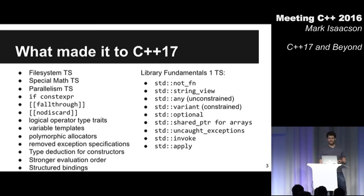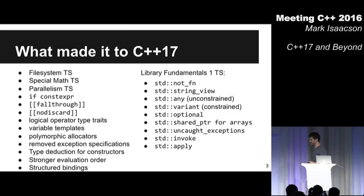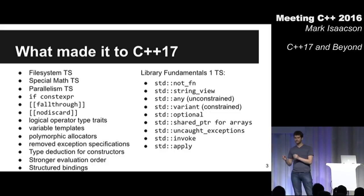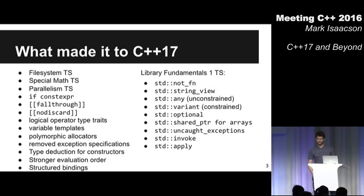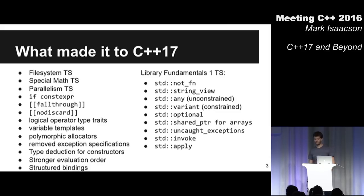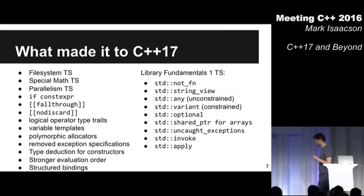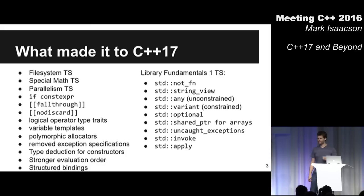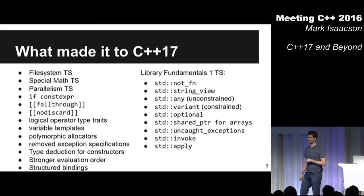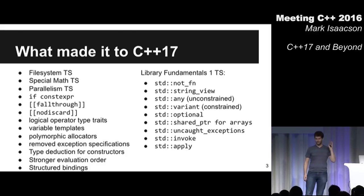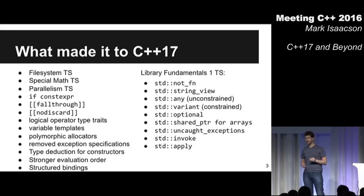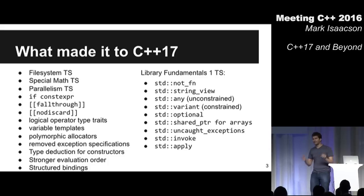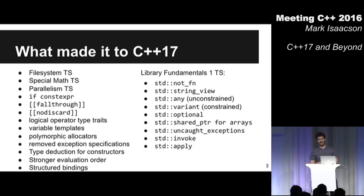We've got a stronger evaluation order for certain operations. Previously it was not defined whether A or B would be evaluated first in the expression A.foo(B). Now you're guaranteed that A happens first — nice when talking about things like future.then. Structured bindings — I am irrationally excited about this. In a for loop over a standard map, instead of getting a pair and doing pair.first, pair.second, we can now say key, value — or better yet, for a phone book, say name and phone number.